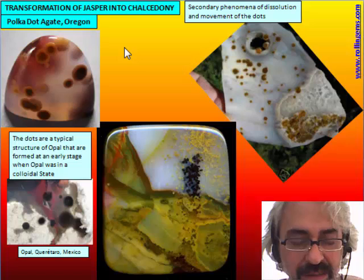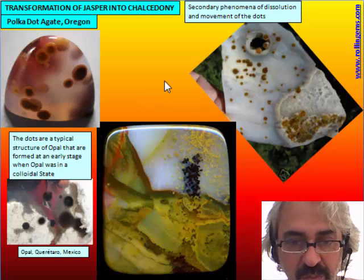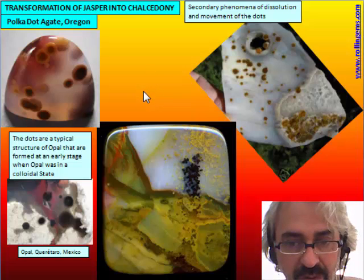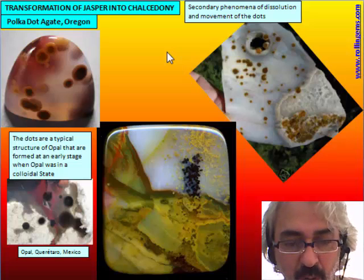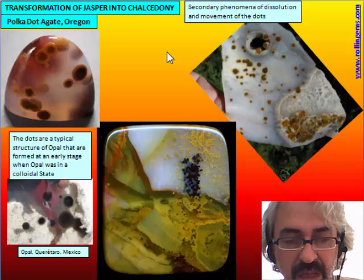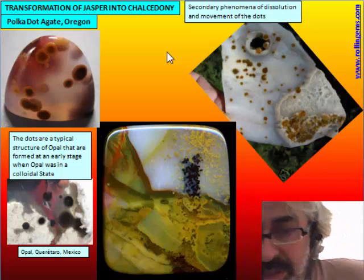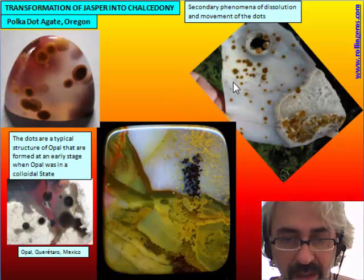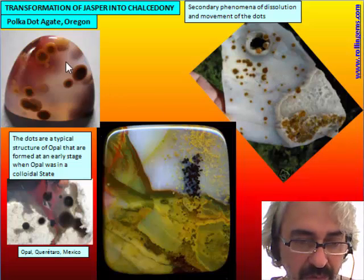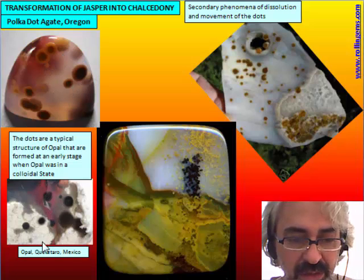There are secondary phenomena in the Jasper responsible for a kind of softening, making it more plastic — a kind of colloidal solution. This is not actually liquid, but is more similar to the first phase of Jasper formation: there is more water inside and it is more plastic. In this plastic colloid, the dots are formed — we see dots floating in this transparent material that are very similar to the dots formed in opal.